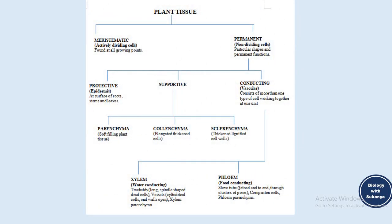Here is a flow chart summarizing the classification of plant tissue. Plant tissue divides into meristematic tissue and permanent tissue. Permanent tissue divides into protective, supportive, and conducting. Supportive is classified into parenchyma, colenchyma, and sclerenchyma. Conducting tissue divides into xylem and phloem. You can review the functions and characteristics presented here.